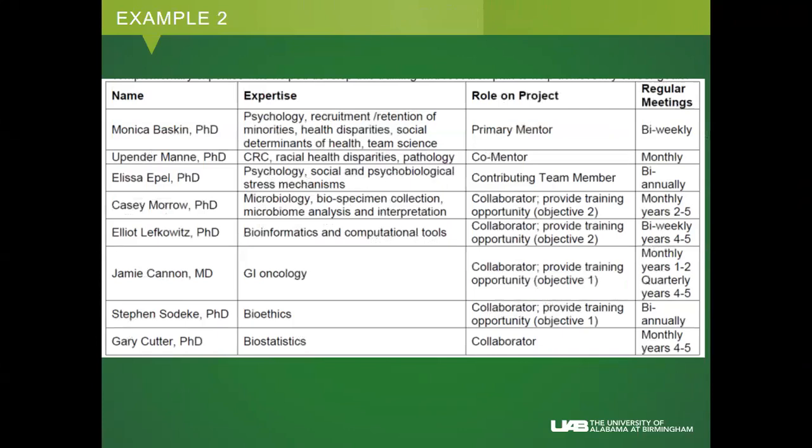Should the primary mentor currently have funding, or is previous funding enough? They should currently have it - if there's a gap of a couple years, you start to get worried. Everyone on the study section is writing their own grants, working hard to continually get funded. In your biosketch you can note a pending resubmission with its score. If there's a gap of a couple years, that raises concern. But if your mentor has effort on other grants, is actively collaborating, and clearly has pending grants, reviewers understand.